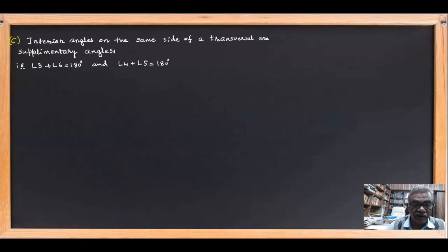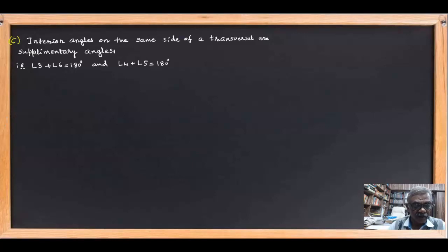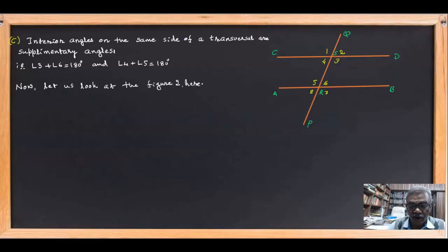Next, interior angles on the same side of the transversal are supplementary. That means angle 3 plus angle 6 equals 180°, and angle 4 plus angle 5 equals 180°. Looking at the figure, angles 4 and 5 are interior angles on the same side PQ of the transversal, and angles 3 and 6 are also interior angles on the same side of transversal PQ.